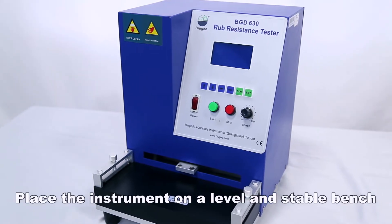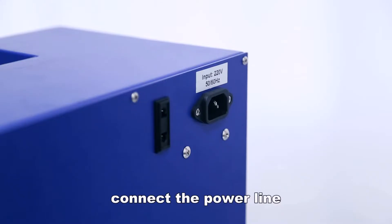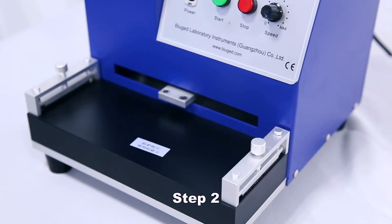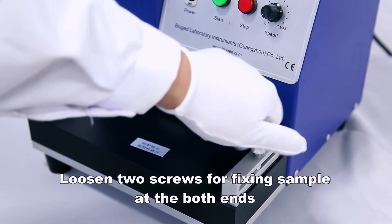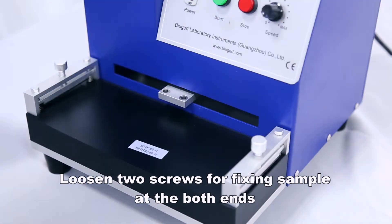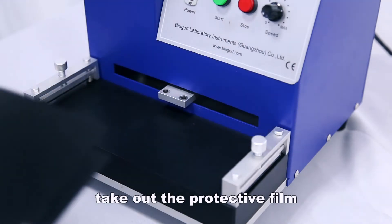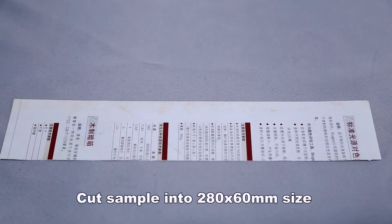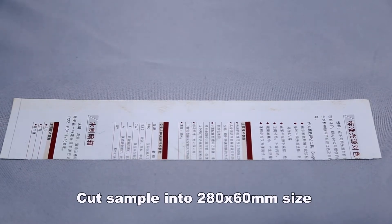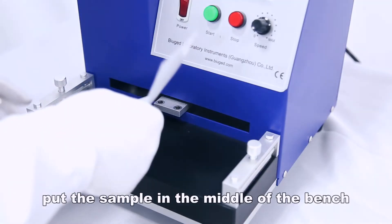Place the instrument on a level and stable bench and connect the power line. Loosen two screws for fixing the sample at both ends, take out the protective film, and cut the sample into 280 x 60 millimeters size. Put the sample in the middle of the bench.